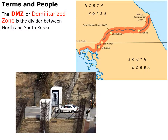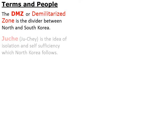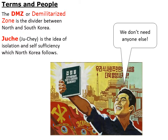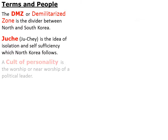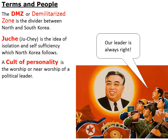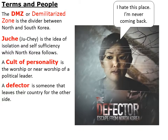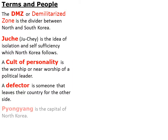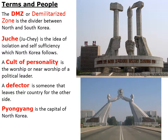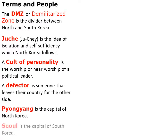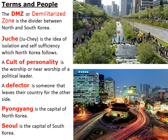The DMZ, or demilitarized zone, is the divider between North and South Korea. Juche is the idea of isolation and self-sufficiency, which North Korea follows. A cult of personality is a worship or near-worship of a political leader. A defector is someone who leaves their country for the other side. Pyongyang is the capital of North Korea, and Seoul is the capital of South Korea.